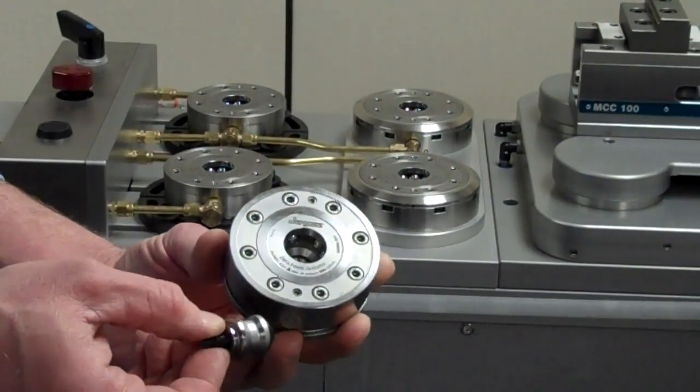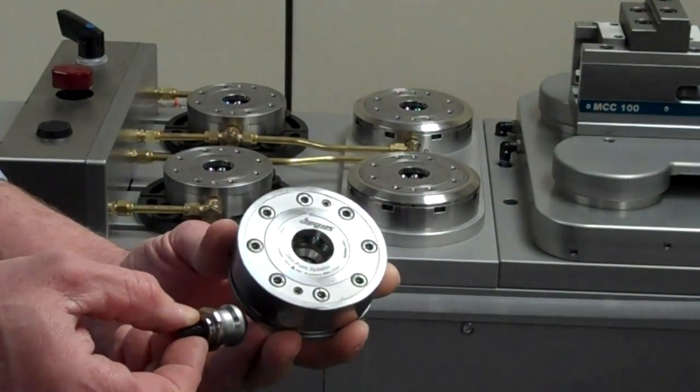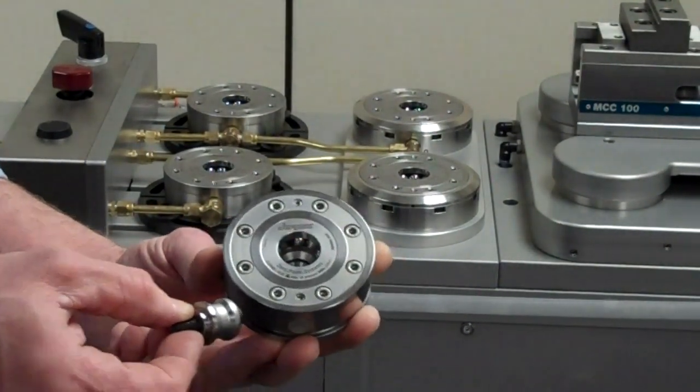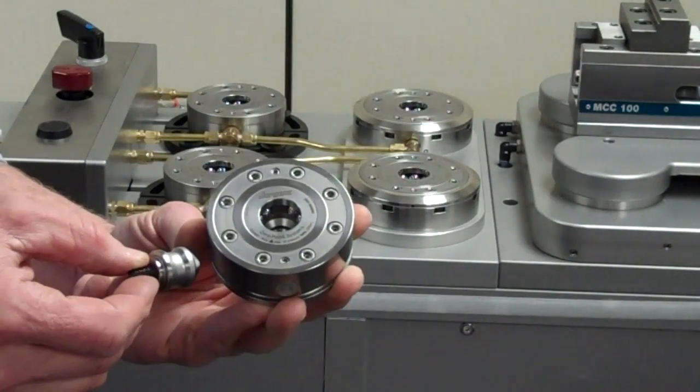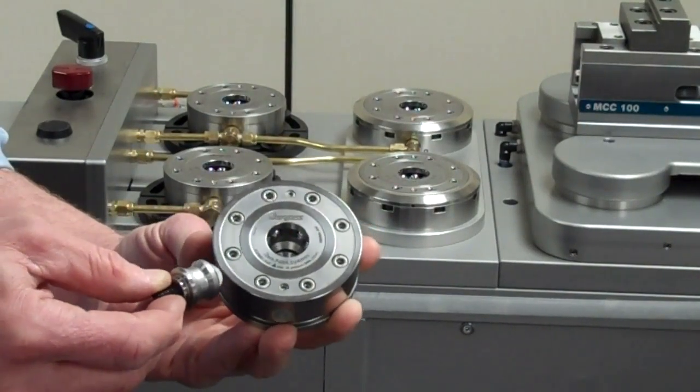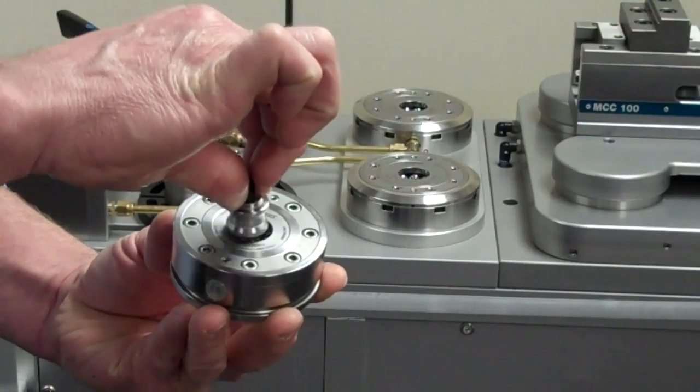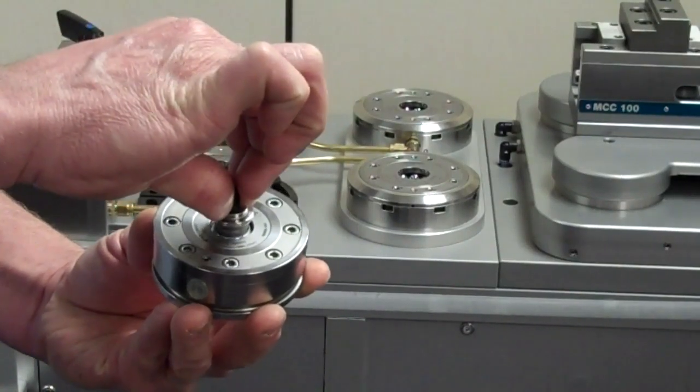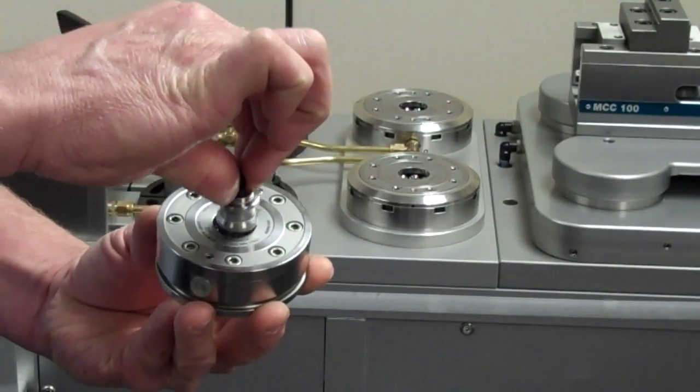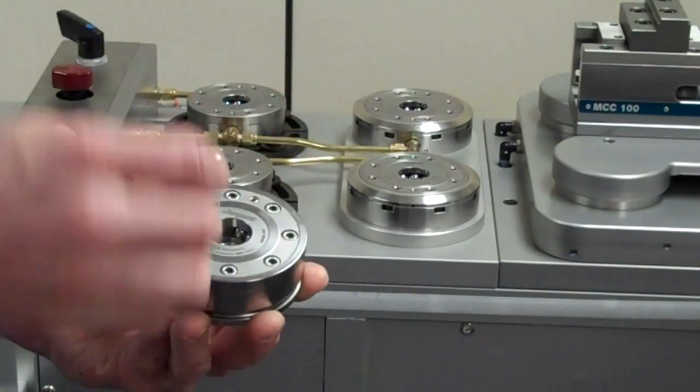This can be attached directly to a fixture plate, a vice, or the part itself. The self-centering stud easily finds and locates the receiver and then can accurately be locked in position either pneumatically or hydraulically.